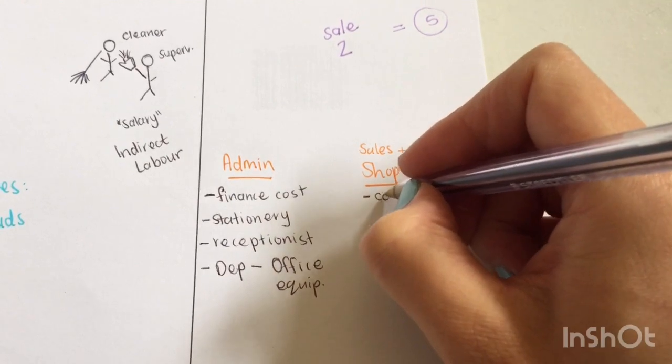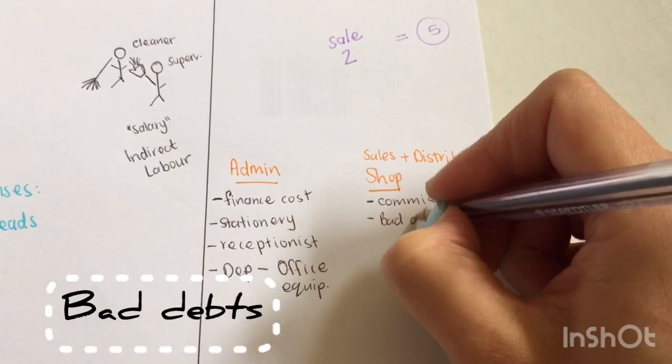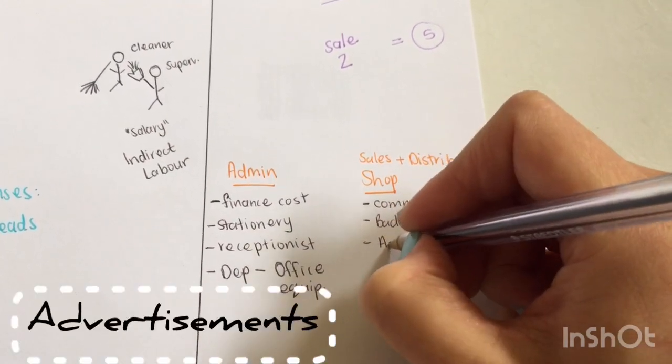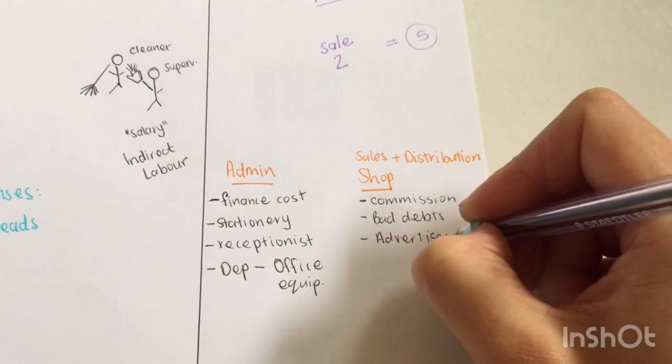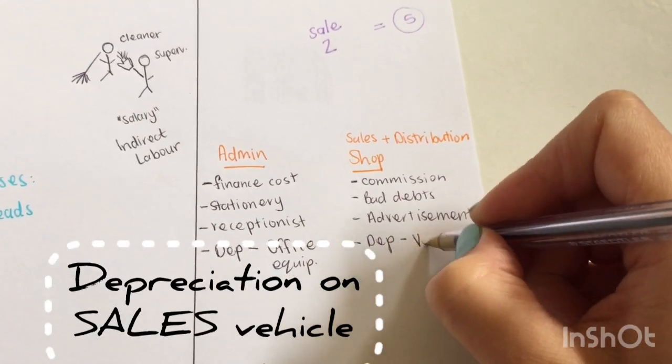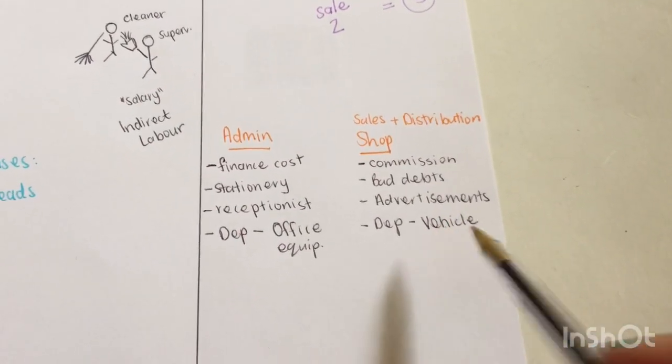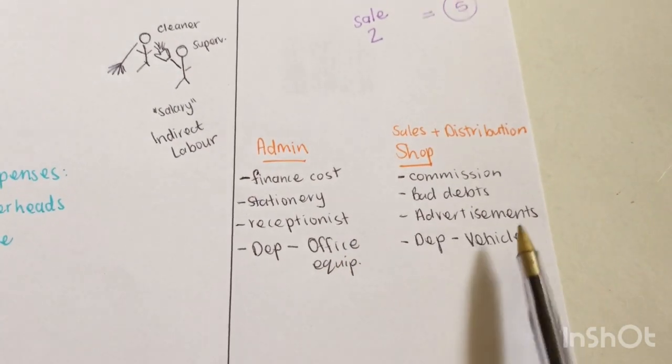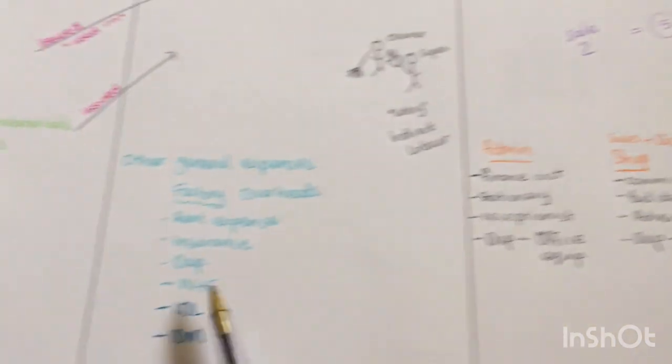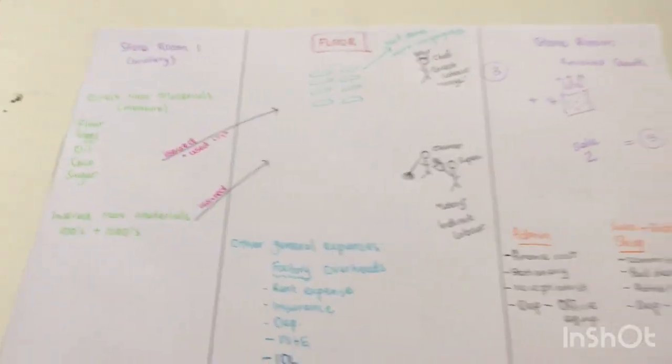For sales and distribution, we will have commission, bad debts, advertisements, and then there might be depreciation or any other expenses—and this is now very important—for the vehicle, because the vehicle is used to go and deliver the product to the customer. So over here, depreciation will be for the factory equipment. Over there, it will be for the office equipment, and over there for the vehicle. The vehicle can be used by the factory, but then you will divide the cost proportionally. But that's basically then how it goes.